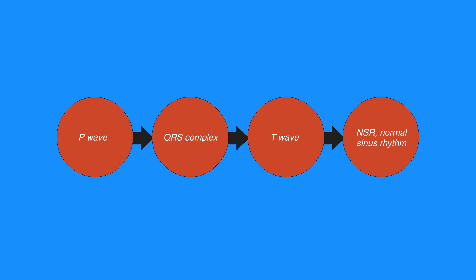Abnormalities in the conduction system can cause delays in the transmission of the electrical impulse and are detected on the ECG. These deviations from normal conduction can result in dysrhythmias such as heart blocks, pauses, tachycardias, bradycardias, blocks, and dropped beats.